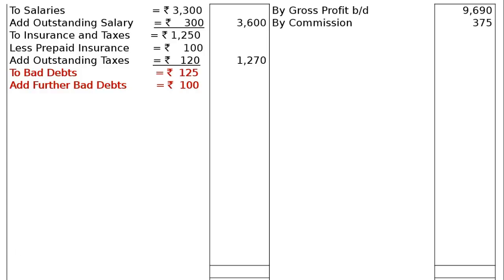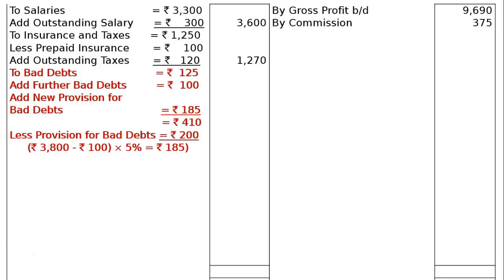Also in adjustment five, a provision for doubtful debts is to be made equal to 5% on sundry debtors. Deducting rupees 100 from the debtors given in the trial balance, the remaining balance is used to calculate 5%, which gives new provision rupees 185. Adding all three — bad debts 125, further bad debts 100, new provision 185 — totals rupees 410. Deducting the existing provision for bad debts from the trial balance credit side of rupees 200, the final column shows rupees 210.